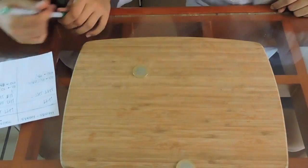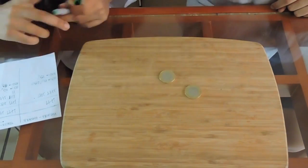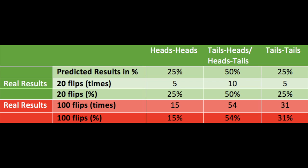We're done flipping — now let's see the results. This time our results varied. We got 15 heads-heads out of 100, which gave us 15%. We got 54 tails-heads or heads-tails out of 100, which gave us 54%. And 31 tails-tails out of 100, which gave us 31%.